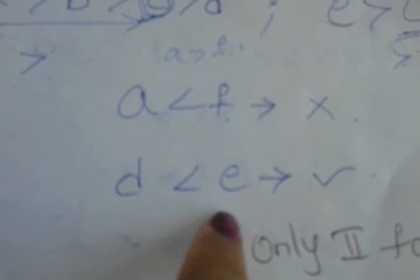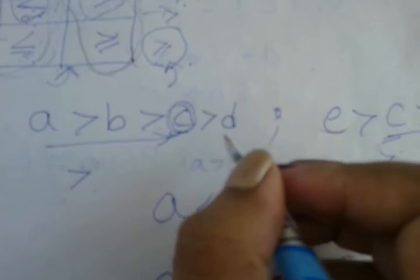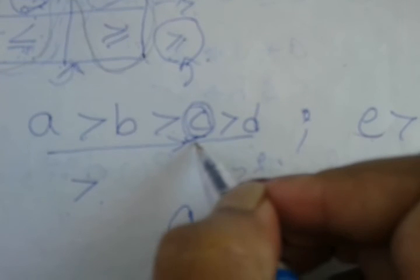Next: is D less than E? D is in the first statement and E is in the second. The common factor is again C. Going from D to C it's the reverse direction - so we take the opposite symbol. If going forward gives greater than, going backward gives less than. The opposite of greater than is less than, the opposite of greater than or equal to is less than or equal to, and vice versa. Equal to stays equal - it's neutral and won't cause confusion. So D to C in reverse gives less than; C to E going forward gives greater than.